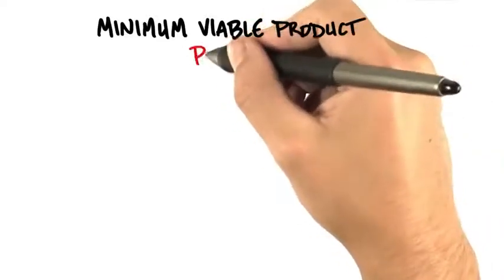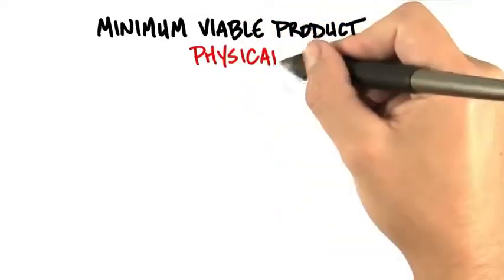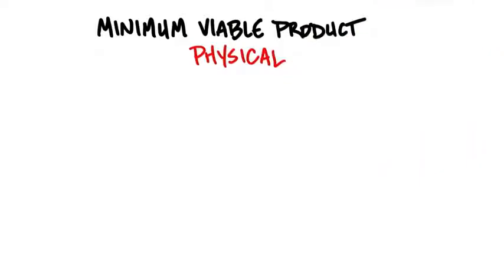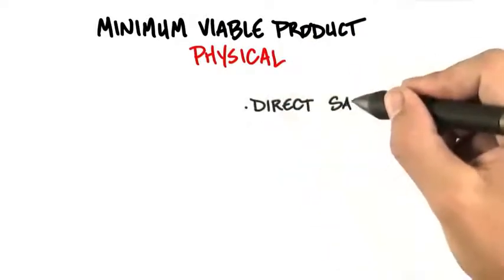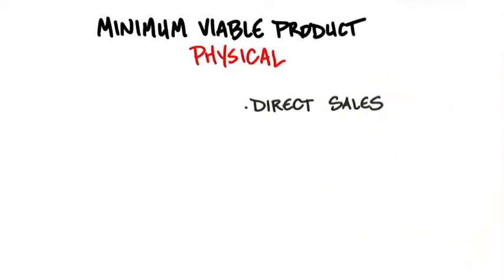This is where the difference between physical and web/mobile channels first comes into play. The MVP for a physical channel—something you sell directly through stores and with a direct sales force—is very different than something you might be building for the web or even more so for a mobile channel.